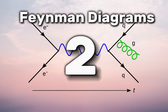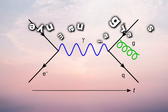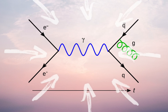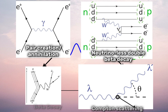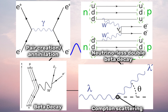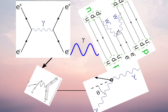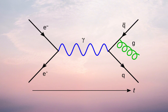2. Feynman Diagrams. Feynman diagrams are a visual representation used in quantum field theory to depict the interactions between subatomic particles. Developed by Feynman, these diagrams simplify complex particle interactions by representing them as lines and vertices, making it easier to calculate and understand the probabilities of various processes in the quantum world.